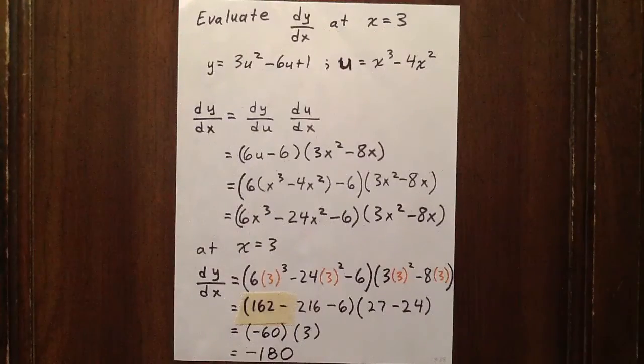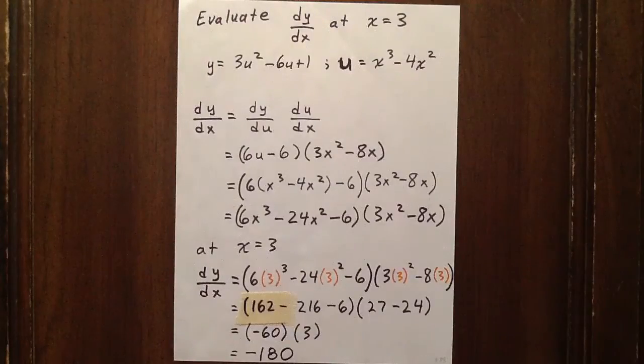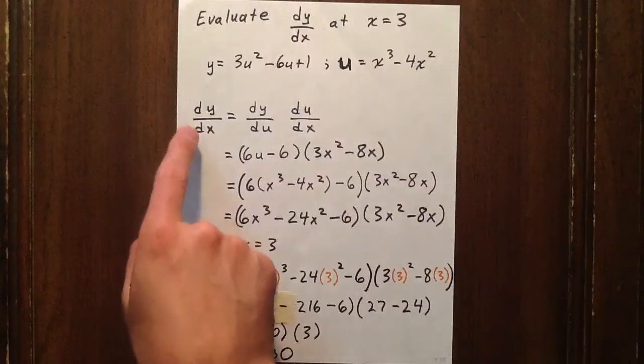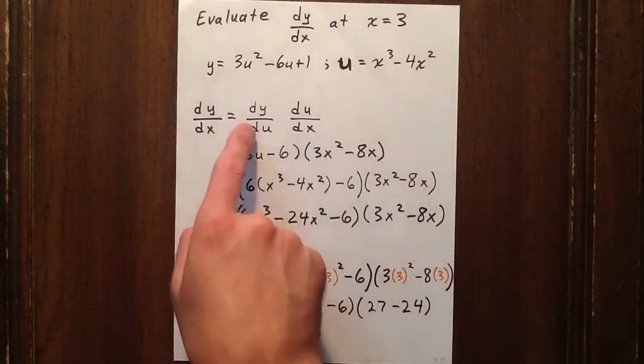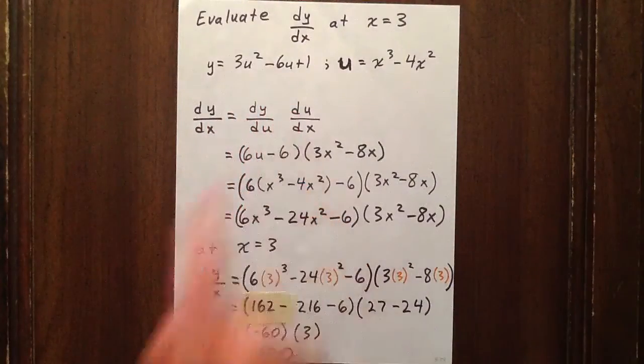We don't have an expression for y in terms of x, but we do have an expression for y in terms of u, and for u in terms of x. So dy/dx is equal to dy/du times du/dx.